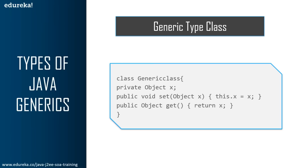Let's understand the generic type class with an example. Here I have created a class with one property X, and the type of the property is object. Once you initialize the class with a certain type, the class should be used with that particular type only. For example, if you want an instance to hold a string value, you should set and get only string types. Since the property type is declared as object, there is no way to enforce this restriction — a programmer can set any object and expect any return value from the get method, since all Java types are subtypes of object class.